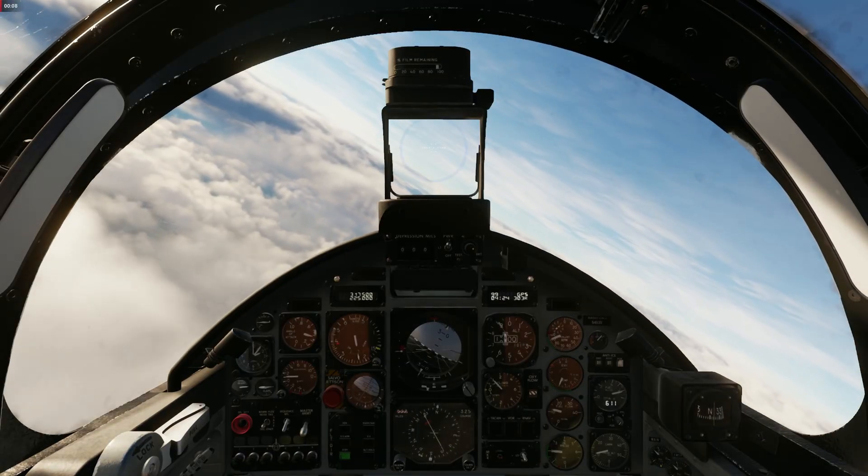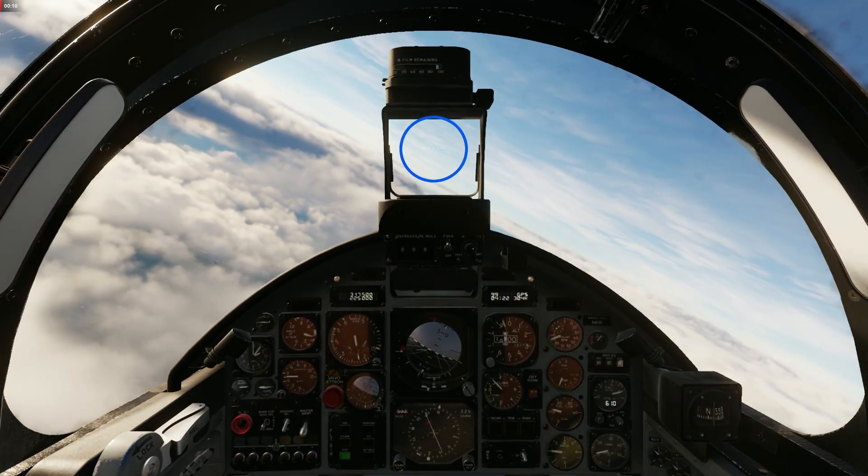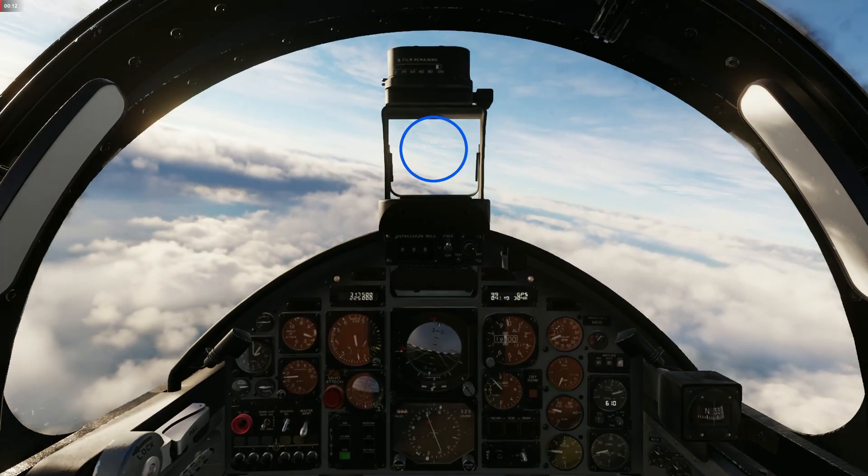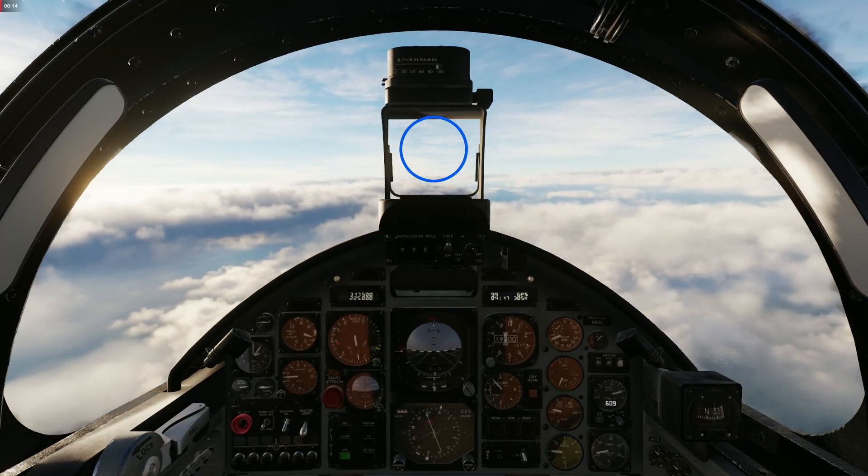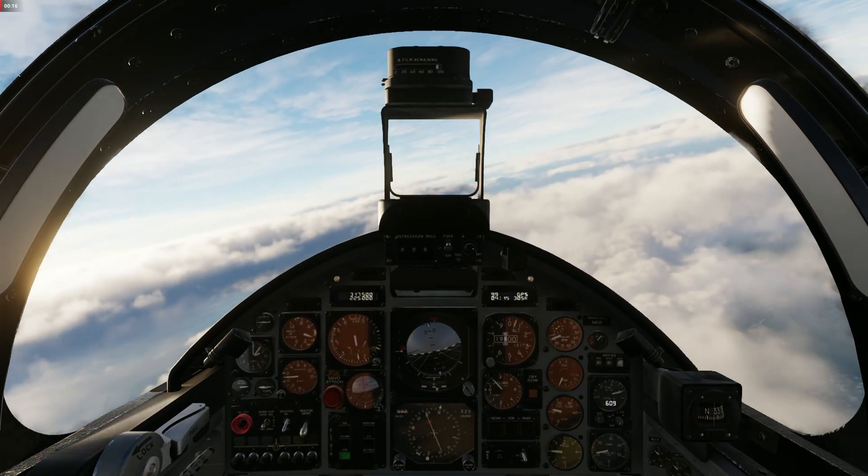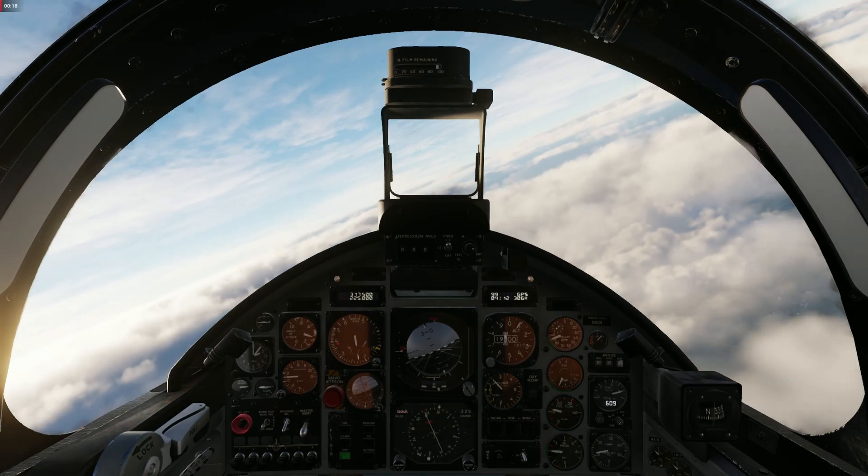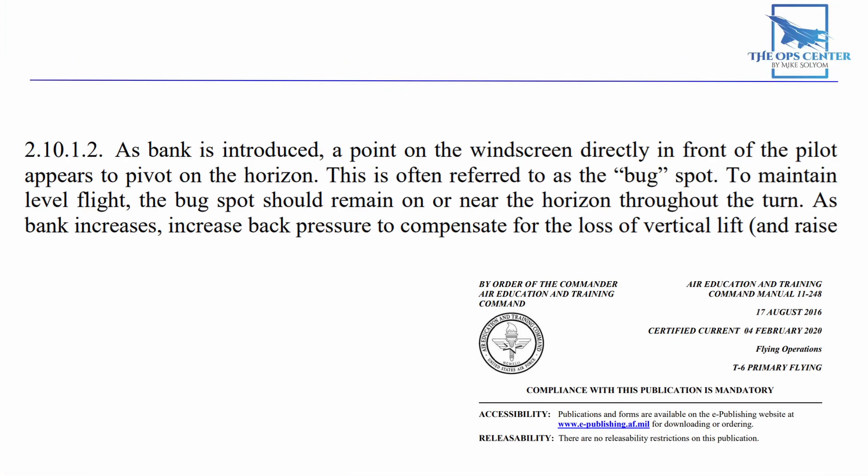Whenever you bank the aircraft, you'll notice a spot on the canopy that remains still, while the rest of the world appears to pivot around it. This spot is where your plane is heading. So you have a visual indicator of your flight path. The US Air Force has a name for this phenomenon. It's called the bug spot. And here's how the Air Force says we use the bug spot.